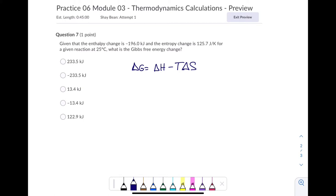We've got an enthalpy change of negative 196.0. That is in kilojoules. We've got an entropy change, that's our delta S, of 125.7. That's in joules per Kelvin. We're looking for... Oh, we've got a temperature at 25 degrees Celsius.